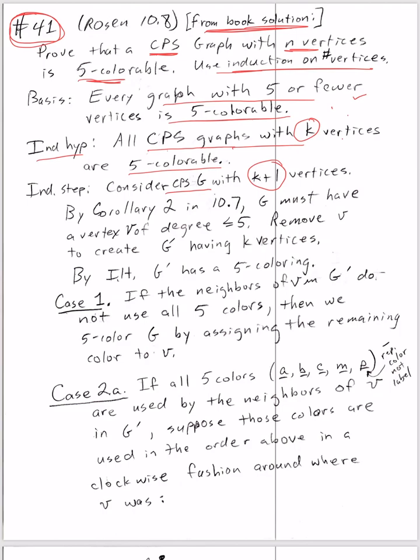We want to remember corollary two in section 10.7 on planar graphs. It says that g, if it's connected planar and simple, must have a vertex v that has degree five or less. What we're going to do is remove that vertex that has degree five or less. We're going to induce g prime, which now has k vertices, and then use my inductive hypothesis to say that g prime has a five coloring.